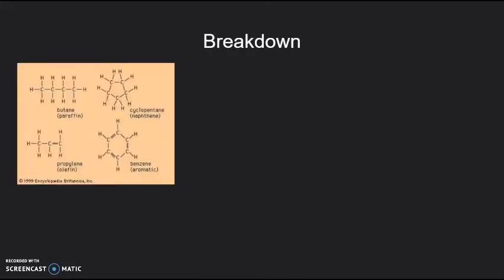Here's the breakdown. At 400 degrees Celsius, toluene and methanol create hydrocarbons. Hydrocarbons are stuff like butane, propylene, cyclopentane, benzene, pretty sure propane is one of them.